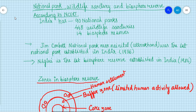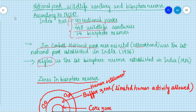According to NCERT, India has 90 national parks, 448 wildlife sanctuaries, and 14 biosphere reserves. In India, Jim Corbett National Park, near Nainital in Uttarakhand, was the first national park established in India. And India's first biosphere reserve is the Nilgiri Biosphere Reserve.